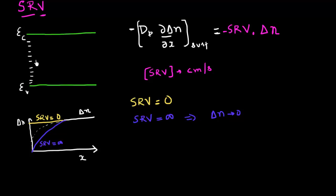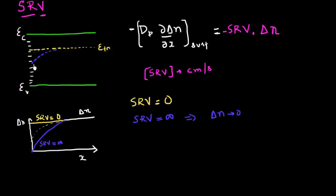I can also denote this excess number of electrons by the quasi Fermi level. In the case where surface recombination velocity is zero, this quasi Fermi level remains flat as I approach the surface. Versus the case when surface recombination velocity is infinite — then this quasi Fermi level approaches the value of the intrinsic energy level of the semiconductor.